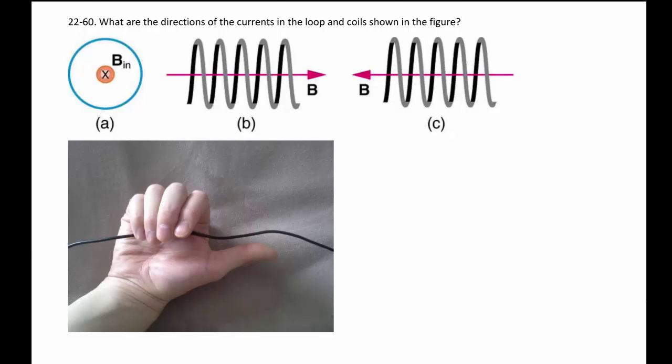Again our expensive hand model is gracious enough to take a picture for us. How this works is if you have a current going down this wire, say there's a current going through.